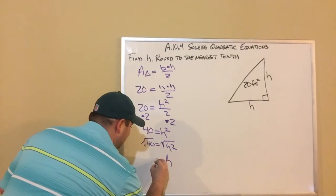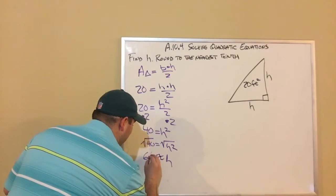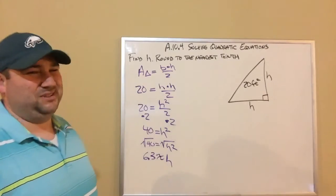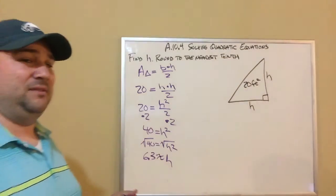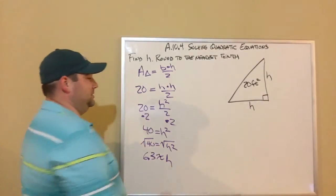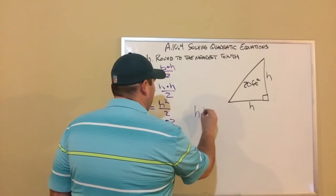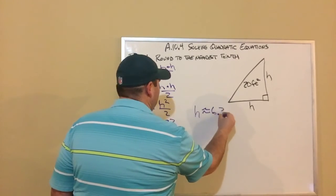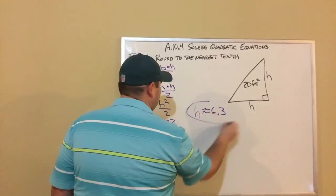I could actually use the approximate symbol if I really wanted. It's not a big deal. If you didn't use it, it's fine because you were told to round to the nearest tenth. So if you didn't use the approximate symbol, H is approximately 6.3. That is our answer.